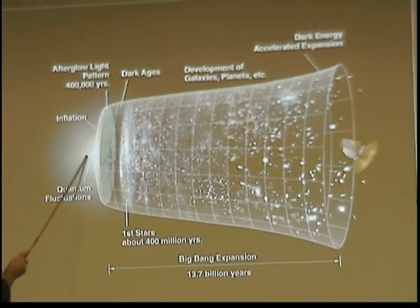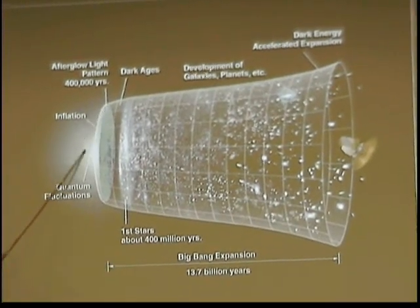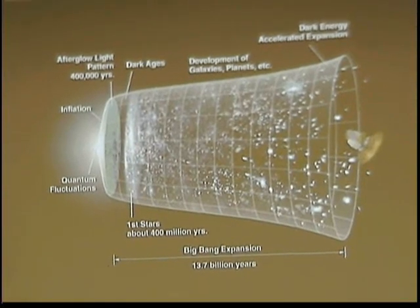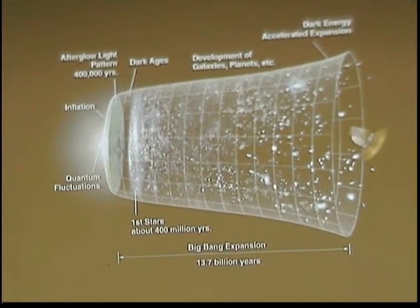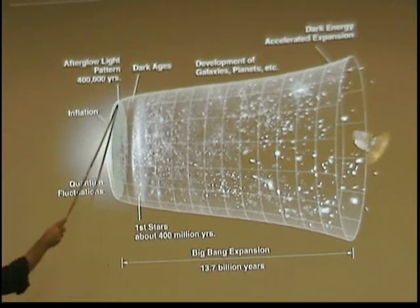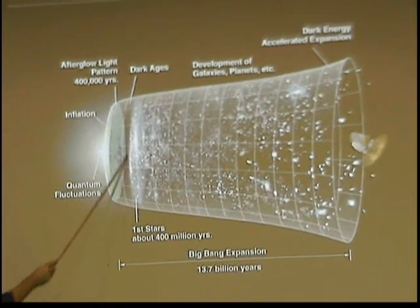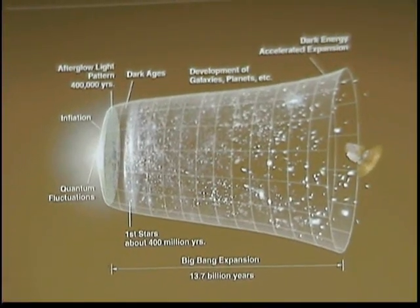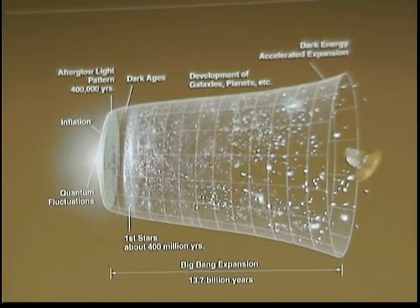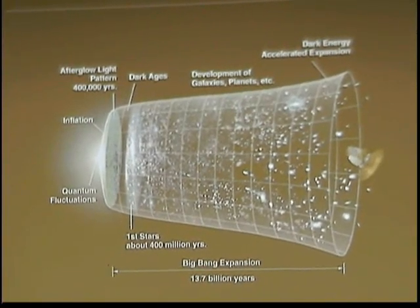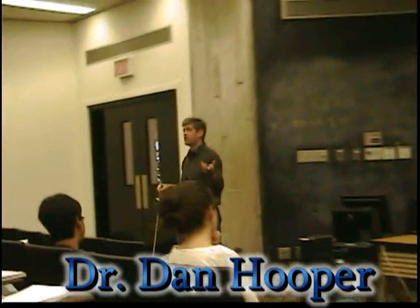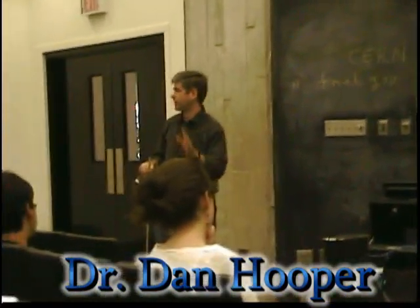From there, rapidly the universe accelerated in expansion, grew super, super fast in a process called inflation. A few hundred thousand years passed, and this radiation was produced — it's known as the cosmic microwave background. We studied that in detail. It's all around us. If you turn on your television, that's static — about one percent of the static you get.